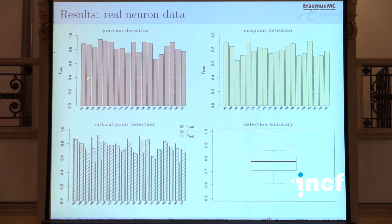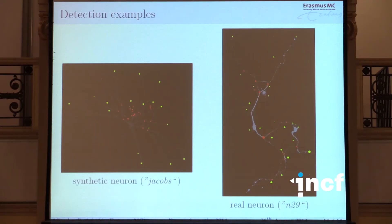For real data, things are not as bright as for synthetic. The same F-scores — junction detection, endpoint detection, and combined — give us around 78-80 percent for this group of images. There's a drop of about 10 percent with real data, which is expected because real data are harder to tackle and synthetic data cannot model all the variability that exists in real life. Visually, there are cases when it misses and cases when it's okay, but in general it captures the topology of the neuron.